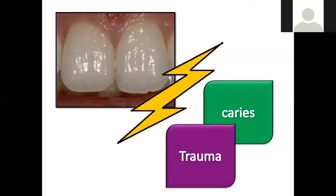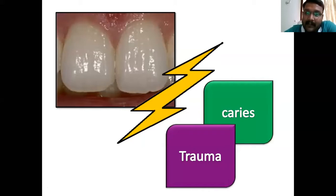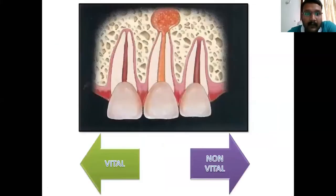That is the only condition where you will come across a tooth with a blunderbuss canal. You have two options for treatment: you can do vital pulp therapy with the proper indications, or you can go for a non-vital therapy.